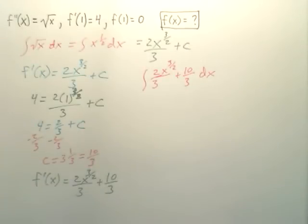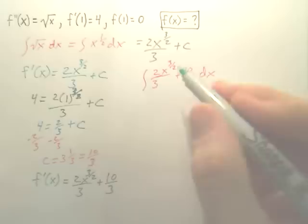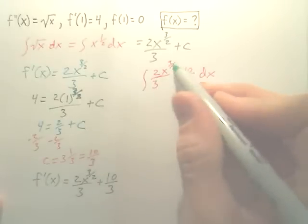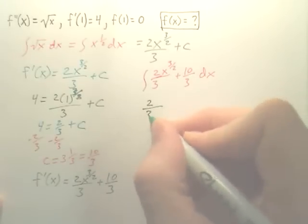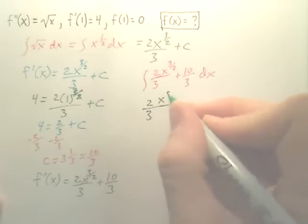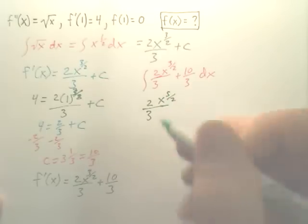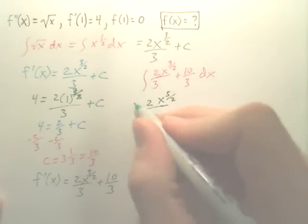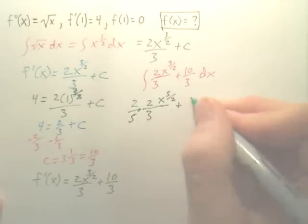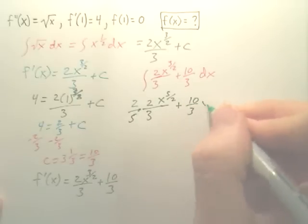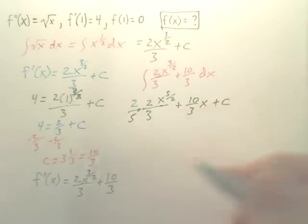So in order to integrate that, we add one to this. We now have the two-thirds, but it's going to be x to the five over two, and then you divide by that, which ends up being multiplying by two-fifths. Plus, you just add an x to that, plus c.